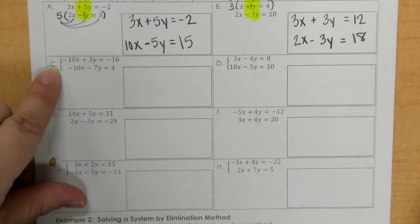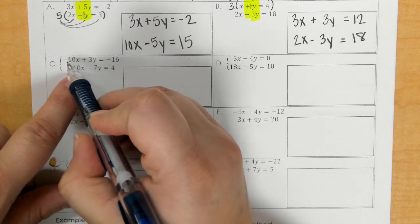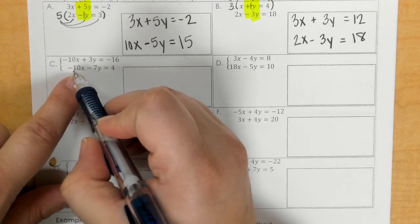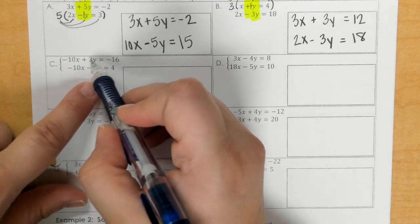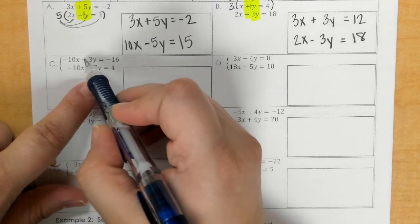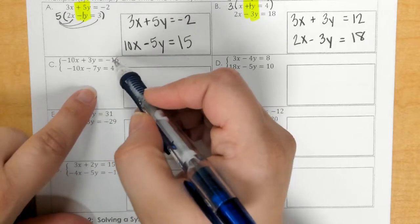In letter C, we check to see if we have opposites. This is really close, but it's not because they're both negative. So that would be negative 20. 3y and negative 7y, yes the signs are opposite, but the numbers are not opposite. So my goal is to figure out what do I want to make opposite.